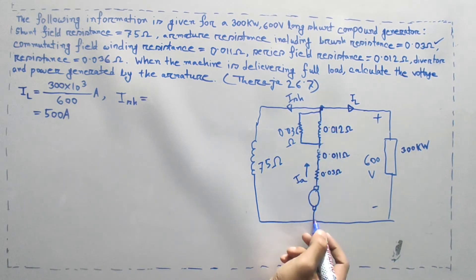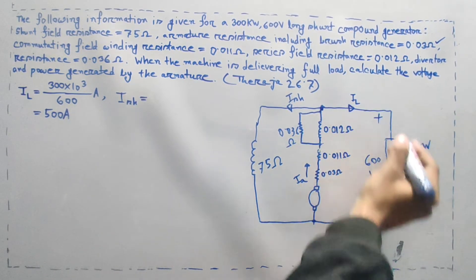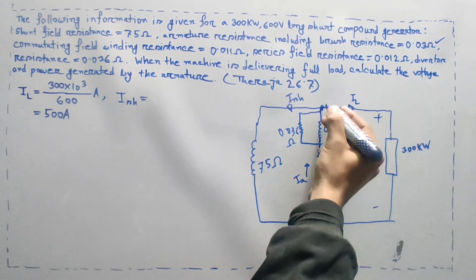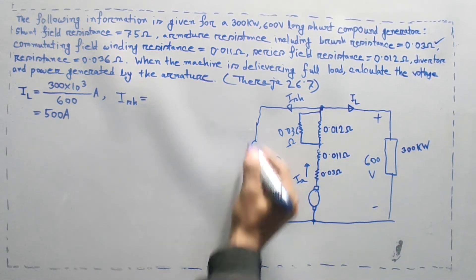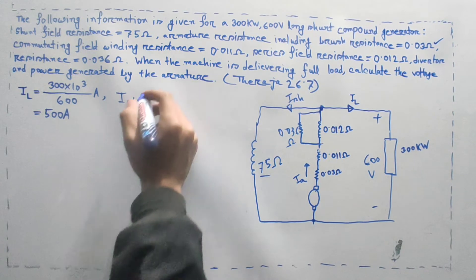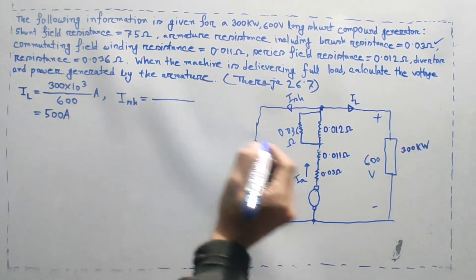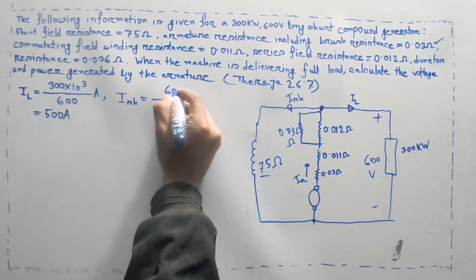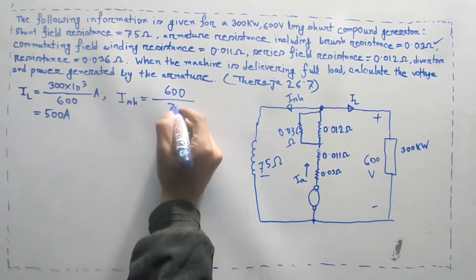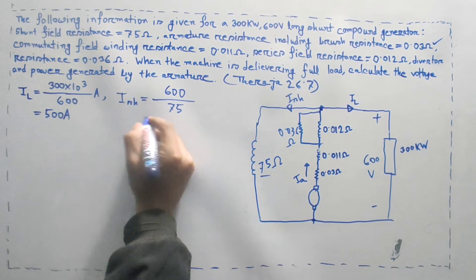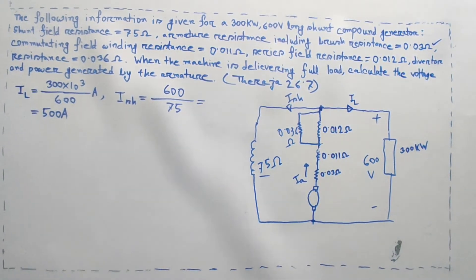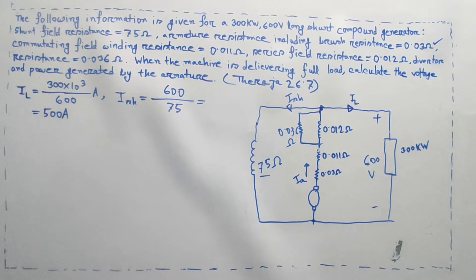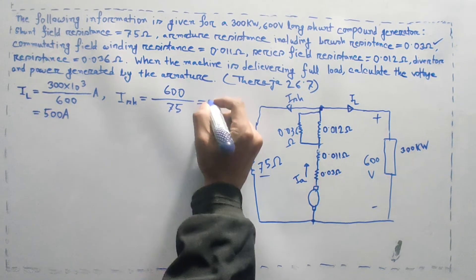We know that the terminal voltage is 600V. The shunt field current: I equals V divided by R, so we have 600 divided by 75. That gives us 8A. So the shunt field current is 8A.